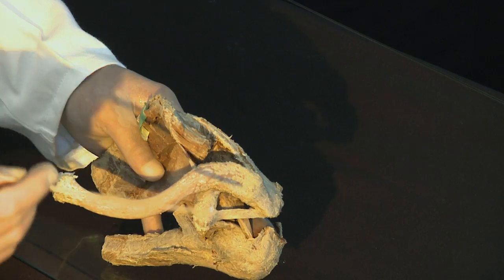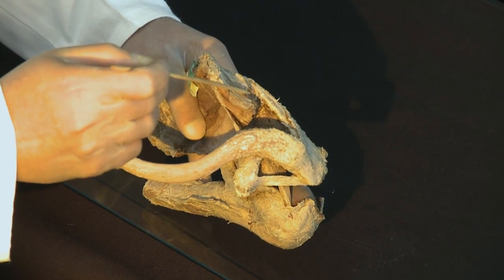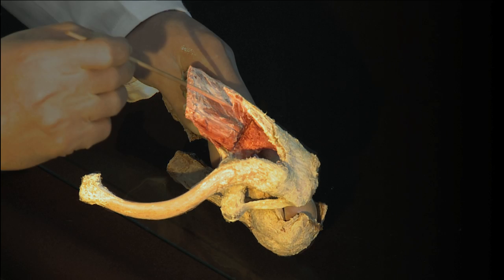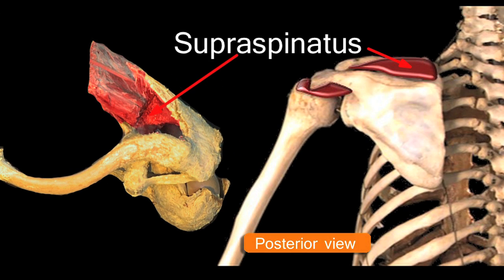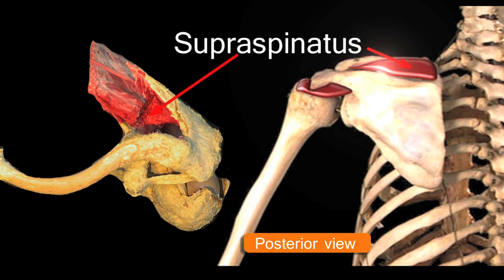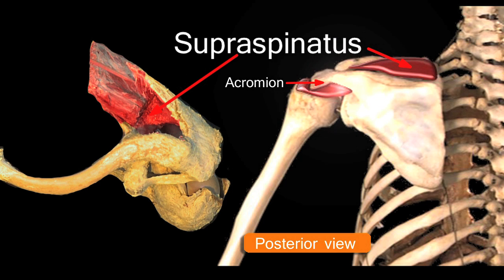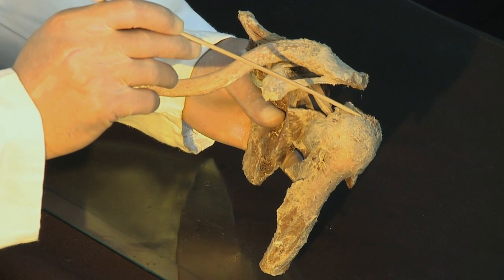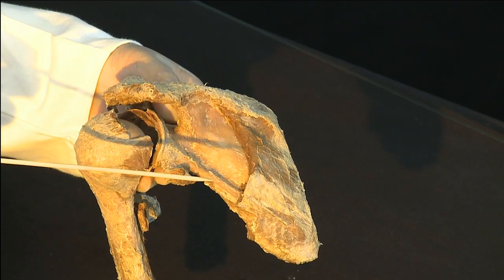We're now going to look at the upper aspect of the shoulder joint. Coming off from the upper surface of the scapula on the posterior aspect, above the spine of the scapula, is this bipennate, powerful muscle — supraspinatus, the abductor of the shoulder joint. Supraspinatus crosses above the capsule of the shoulder joint beneath the acromion and attaches to the upper surface of the greater tuberosity, as seen by its severed tendon here.